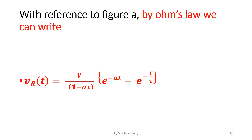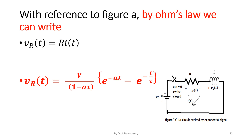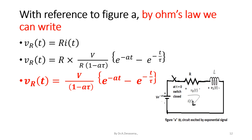With reference to Figure A, by Ohm's law: V_R(t) = R·I(t). Therefore, V_R(t) = R · V/[R·(1 − aτ)] · [e^(−at) − e^(−t/τ)] = V/(1 − aτ) · [e^(−at) − e^(−t/τ)]. This is the voltage across the resistor.